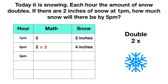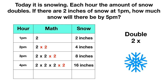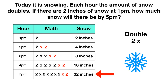At 3 p.m., we take the same amount and multiply by two again — now eight inches. At 4 p.m., we multiply by two again — now sixteen inches. At 5 p.m., we take the same amount and multiply by two one more time, giving us 32 inches. So by 5 p.m., there are 32 inches of snow.